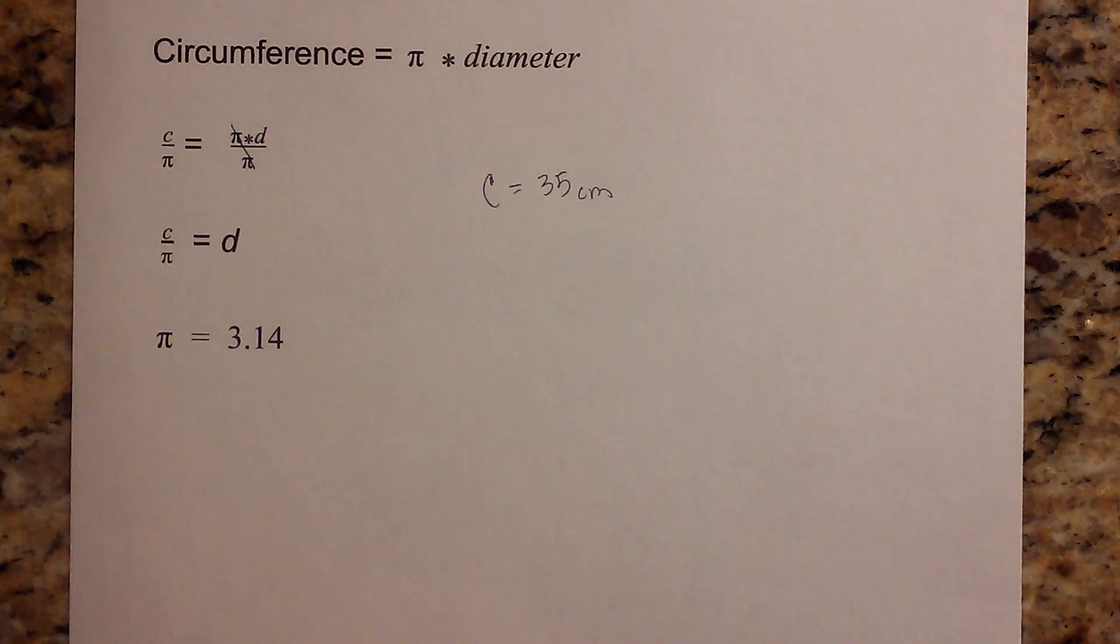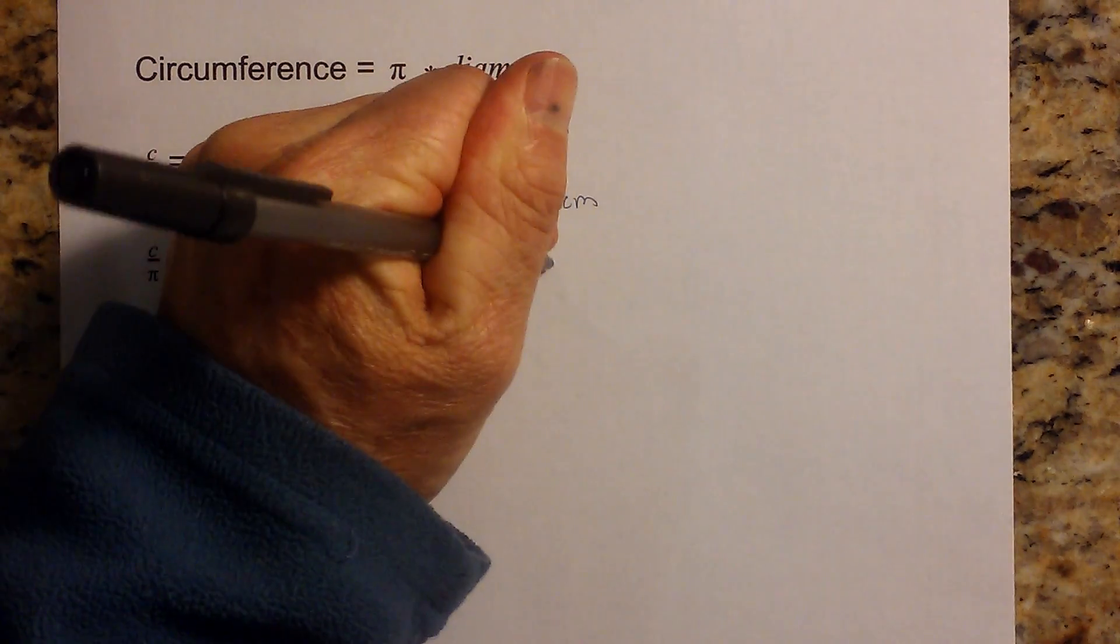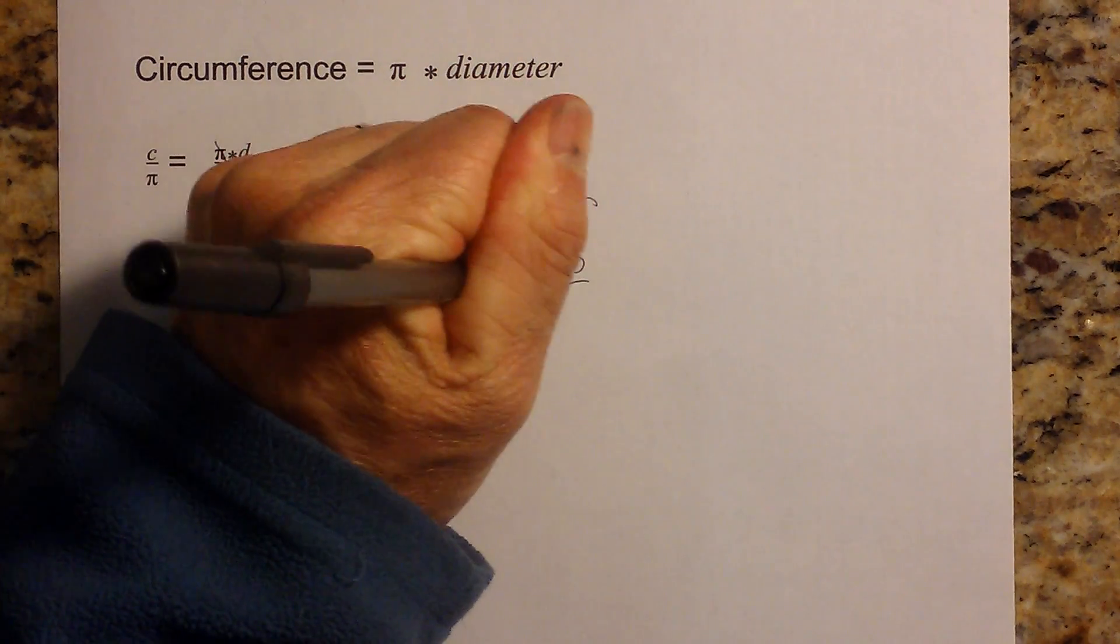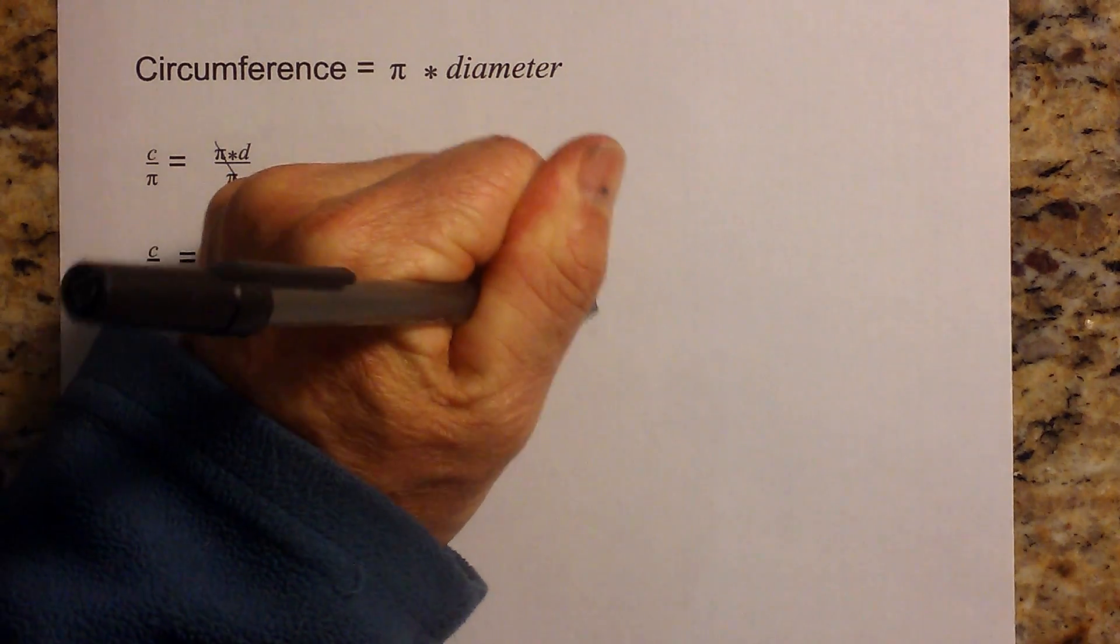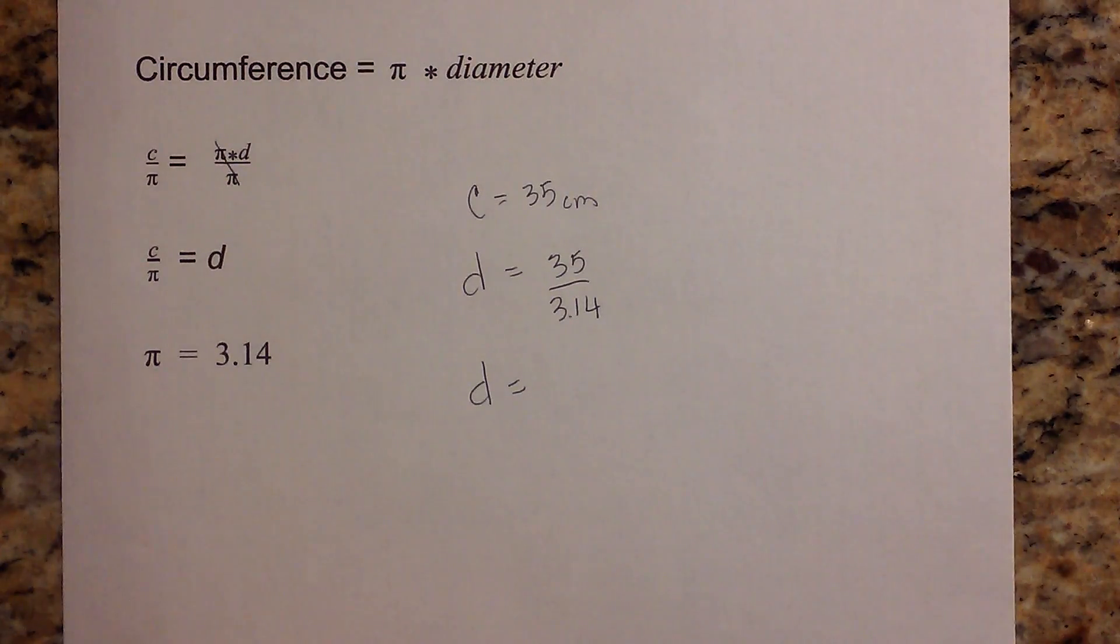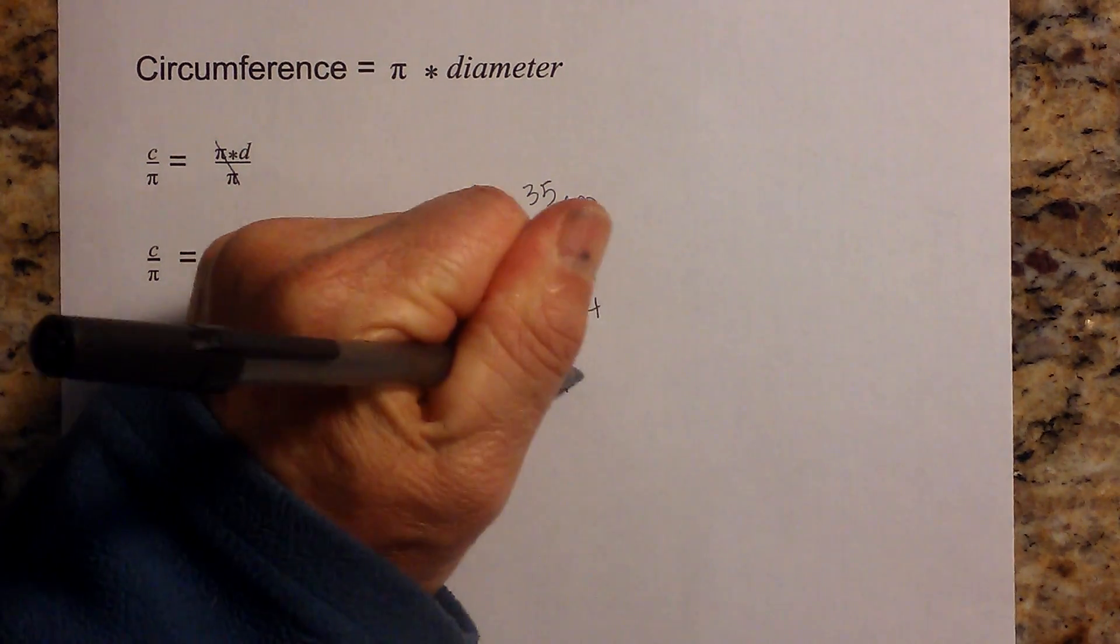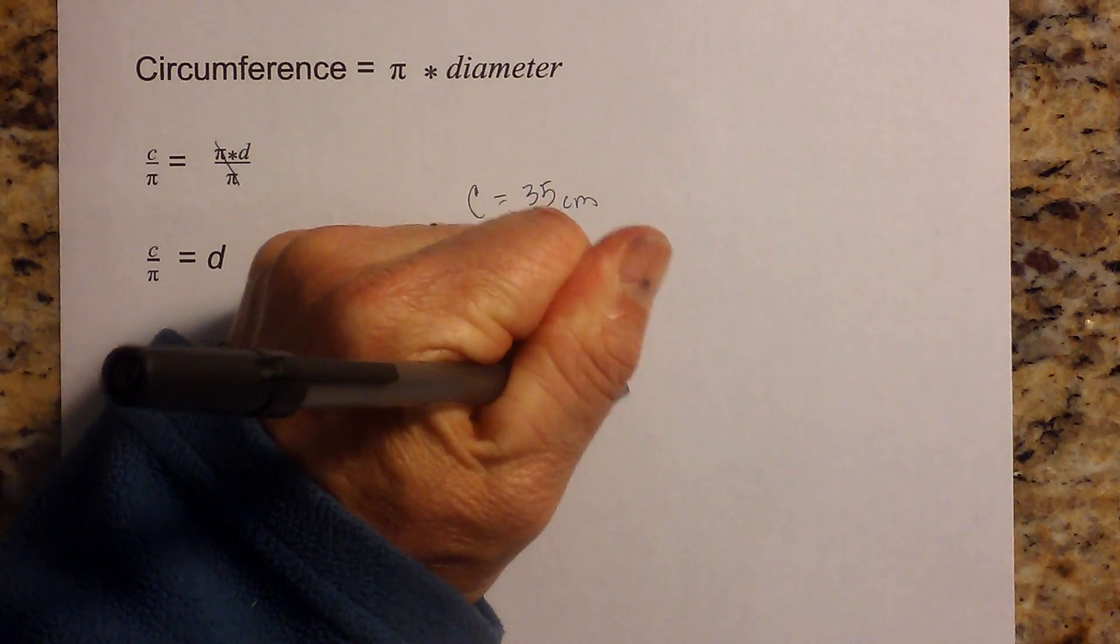So in order to find the diameter, I just divide 35 by 3.14, and that equals 35 divided by 3.14 is 11.14 centimeters.